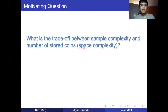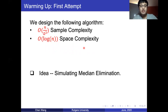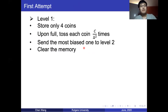This brings us to our motivation: what is the trade-off between sample complexity and space complexity in the coin tossing problem? To better understand the problem, we designed an algorithm with improved space complexity.